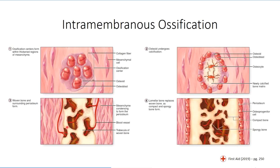Over time, growing nodules will make contact with one another and fuse, surrounding the developing vascular supply, which forms a porous network of bone within the mesenchymal tissue. Once expansion of the nodule is complete, mesenchyme in contact with the inner and outer surface differentiates to form endosteum and periosteum, completing the initial model.